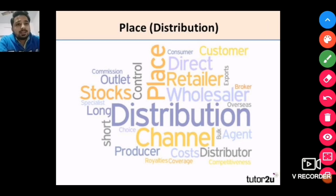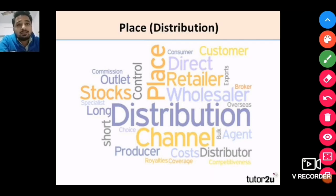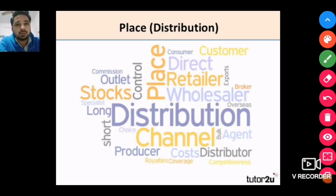In this lesson we considered the place or distribution mix. We studied how customer satisfaction is achieved through different marketing channels or distribution channels — including retailers, wholesalers, direct purchase from producers, agents, and different channels that affect cost and distribution. Thank you everyone for this lesson. Please like and subscribe to Gurukul e-School, and be happy. Thank you.